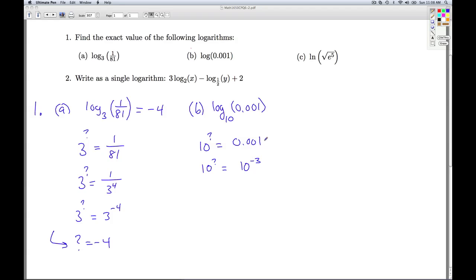Or, if you want, you could write this as a fraction. That's 1 over 1,000, which you could write as 1 over 10 to the third. And you would get 10 to the negative third that way as well. Once again, the 1 to 1 property of exponentials means that what we're looking for is the negative 3.